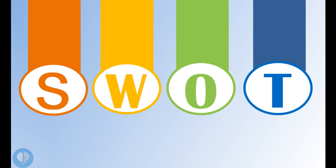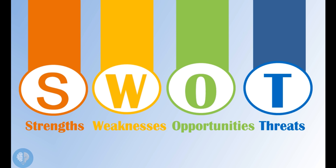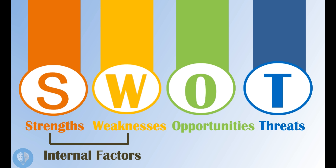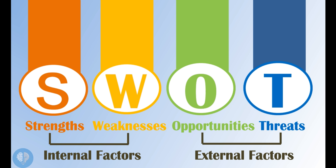The acronym SWOT stands for Strengths, Weaknesses, Opportunities, and Threats. Strengths and Weaknesses comprise internal factors, i.e. factors over which an organization has control, such as product features, processes, people, or brand. While Opportunities and Threats comprise external factors, i.e. factors over which an organization does not have any control, such as government regulations or cultural shifts.